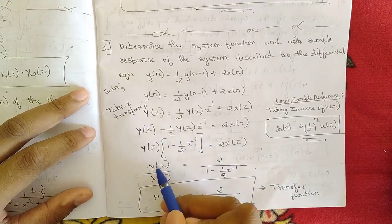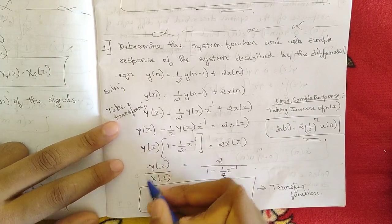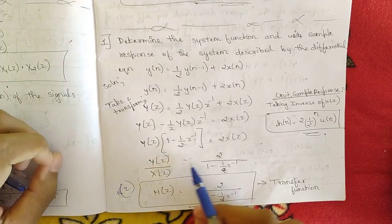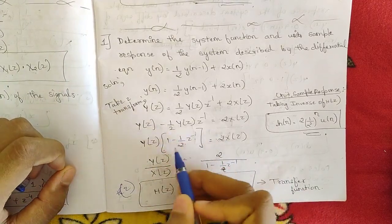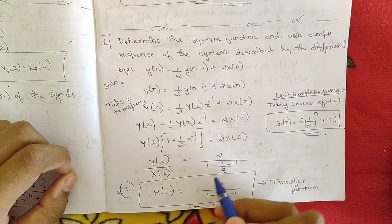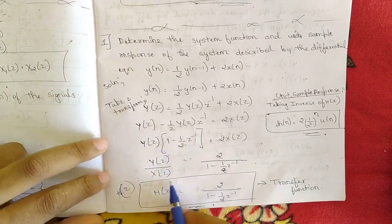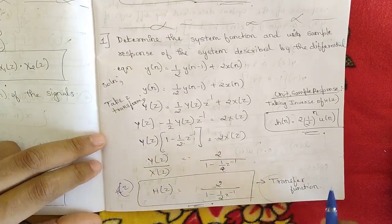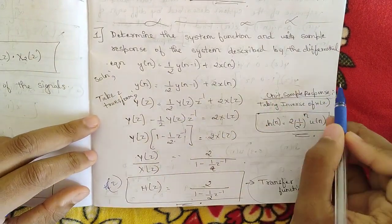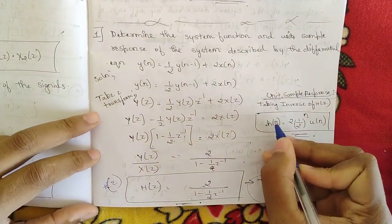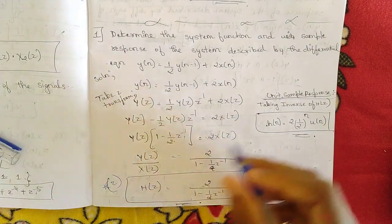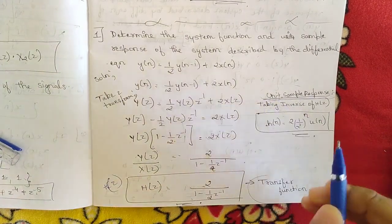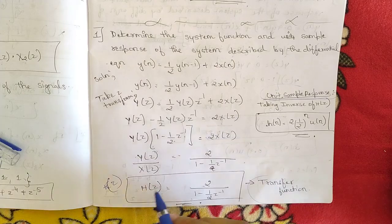Since the transfer function H(z) = Y(z)/X(z), we get H(z) = 2 / [1 - (1/2)z⁻¹]. This is the required transfer function. To find the unit sample response h[n], we take the inverse Z-transform of H(z). We recognize this is of the form 1/(1 - a·z⁻¹), whose inverse Z-transform is aⁿ·u[n].